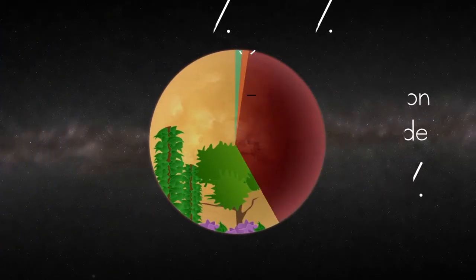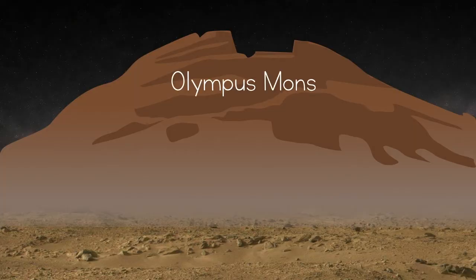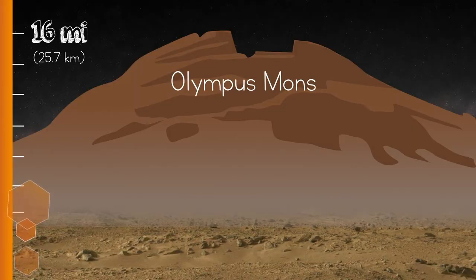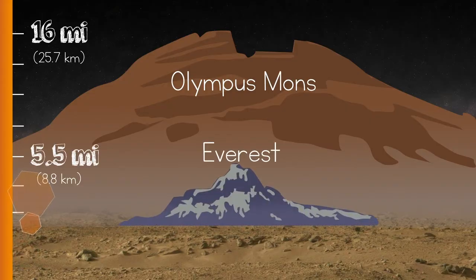Let's go down to the surface now. Did you know that Mars has the largest mountain in the solar system? Olympus Mons is 16 miles high, making it about 3 times higher than Mount Everest, the highest mountain on Earth.